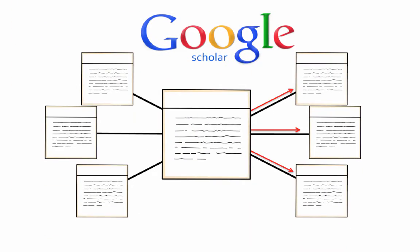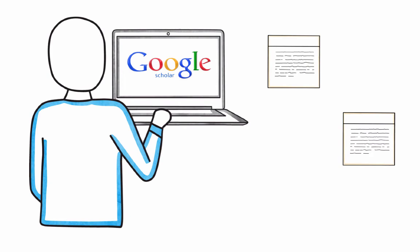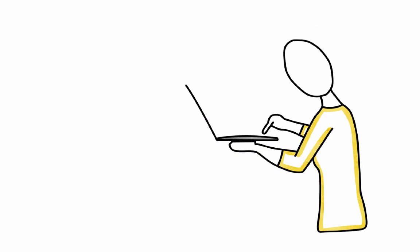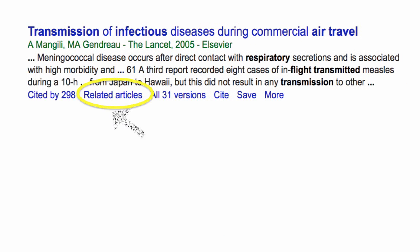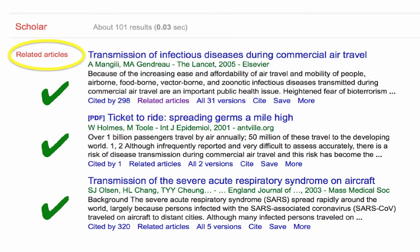Though Google Scholar has forward article networks, it does not provide backward article networks. However, Google Scholar does provide another network option to help us locate relevant information quickly. Right next to the Cited By information is the Related Articles link. Click on Related Articles for a list of connected resources.